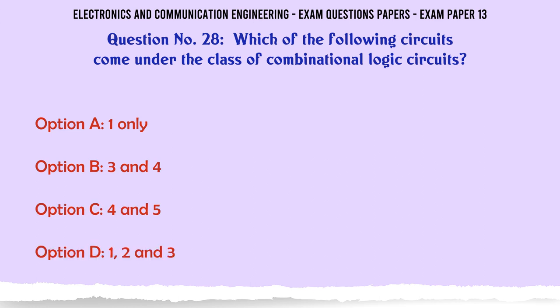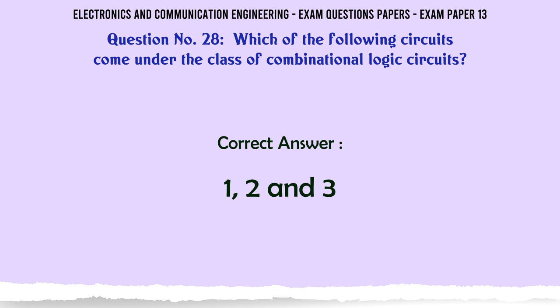Which of the following circuits come under the class of combinational logic circuits? A: 1 only, B: 3 and 4, C: 4 and 5, D: 1, 2, and 3. The correct answer is 1, 2, and 3.